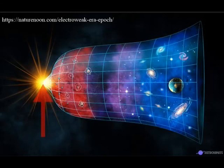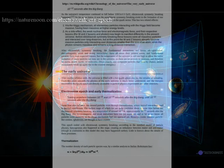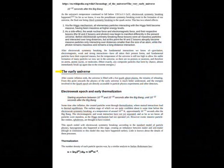First, a recap of Electroweak Epoch and early thermalization. This stage started anywhere between 10 to the minus 22 seconds and 10 to the minus 15 seconds after the Big Bang, until 10 to the minus 12 seconds after the Big Bang. Some time after inflation, the created particles went through thermalization, where mutual interactions led to thermal equilibrium. The earliest stage of which scientists are quite confident is some time before the Electroweak symmetry breaking, at a temperature of around 10^15 K, approximately 10 to the minus 15 seconds after the Big Bang.